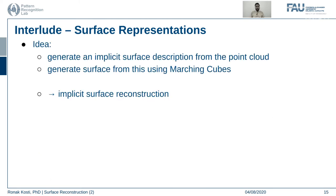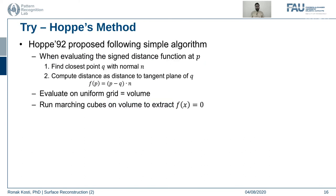The idea is to generate an implicit surface description from the point cloud and then generate the surface using a marching cubes algorithm — this is called implicit surface reconstruction. Hoppe in 1992 proposed a simpler algorithm for finding implicit functions. He proposed a signed distance function (SDF) that can be computed for a given point p in two steps: first, find the closest point q with a normal n — computed using k nearest neighbors to generate a local surface and its normal.